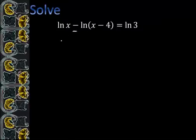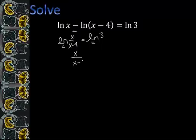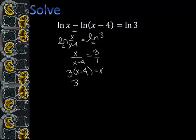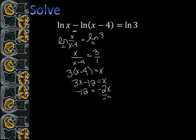Natural log works exactly the same. When I'm subtracting it's the same thing as division, so I'm going to have the natural log of x over x minus 4 equals the natural log of 3. Since natural log equals natural log on both sides, we have x over x minus 4 equals 3. I cross multiply to get 3 times x minus 4 equals x, which gives 3x minus 12 equals x. Subtracting 3x from both sides and dividing, it turns out that x equals 6.